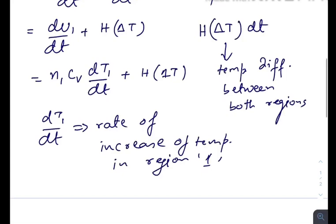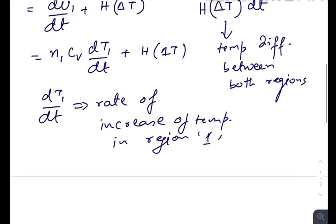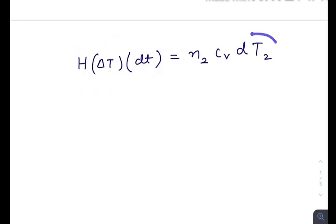Now let us go back to our second region. The heat that is being transferred to the second region in time dt is H·ΔT·dt, and that is increasing the internal energy, which is n2·Cv·dT2. So Cv = H·ΔT divided by n2·dT2/dt.